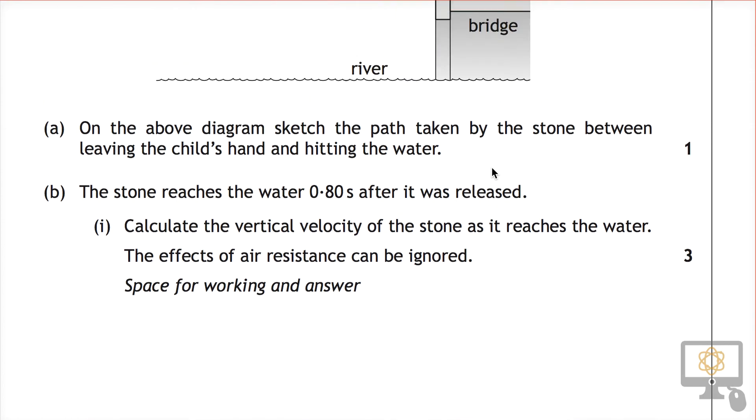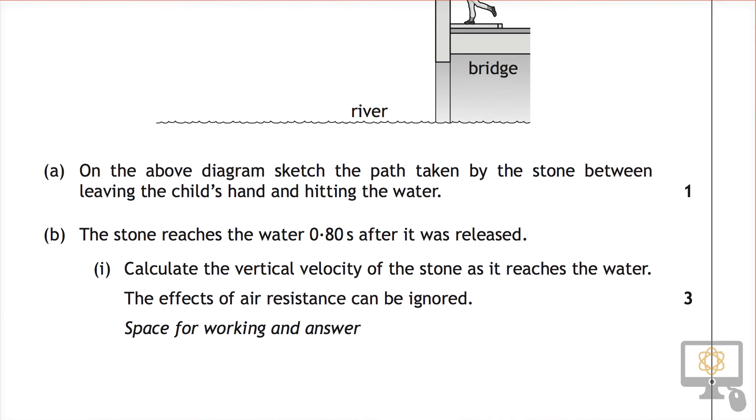We found out that that was about 7.8 meters per second. So that's the final vertical velocity. The initial vertical velocity was zero, the final vertical velocity was 7.8 meters per second.